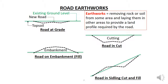On these drawings the ground level is shown as a green line while the new road is shown as a dashed black line. The road may need to go through a hill or be below the existing ground level, in which case the earthworks need to form a cutting.